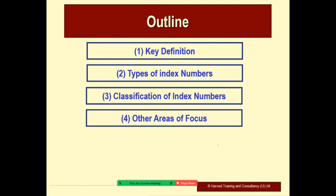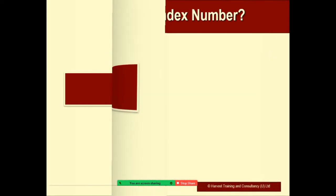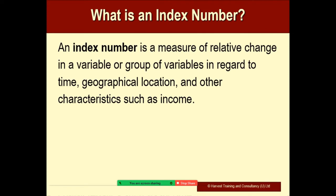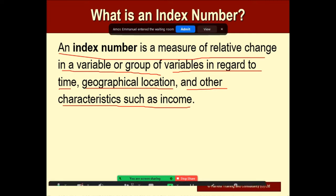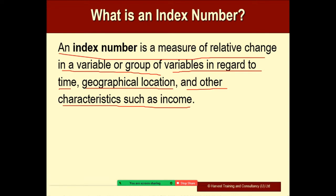We shall begin by defining an index number. An index number is a measure of relative change in a variable or group of variables in regard to time, geographical location, and other characteristics such as income.